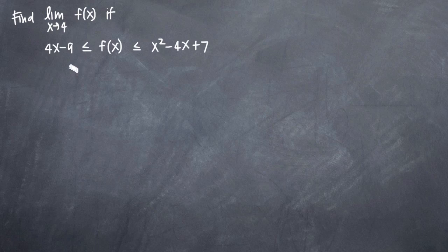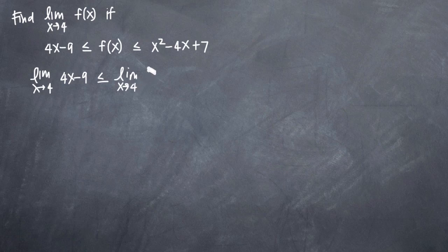we need to take the limit as x goes to 4 of each piece of this inequality. So what we're really asking here is the limit as x approaches 4 of 4x minus 9 less than or equal to the limit as x approaches 4 of f(x) less than or equal to the limit as x approaches 4 of x squared minus 4x plus 7.